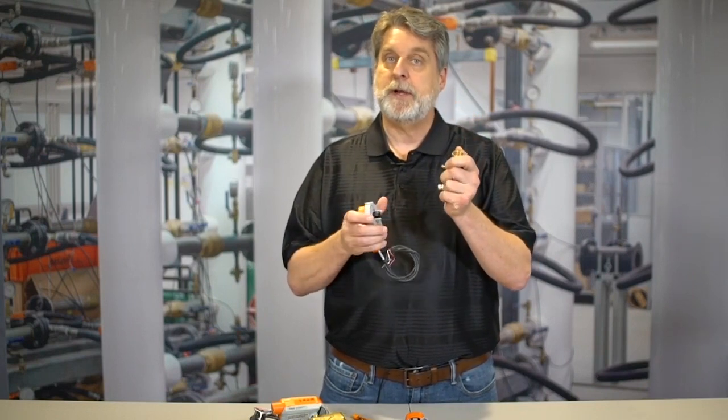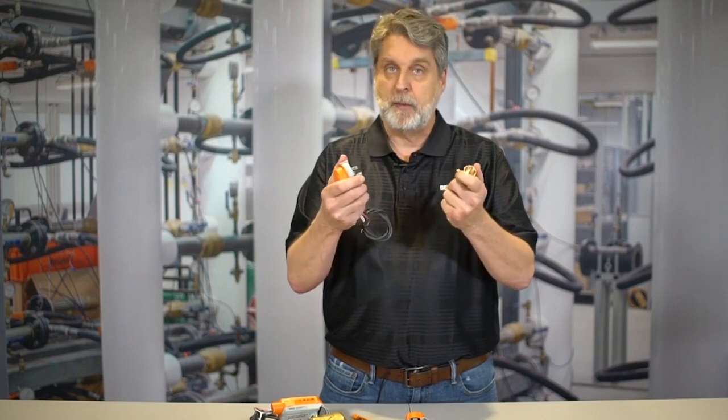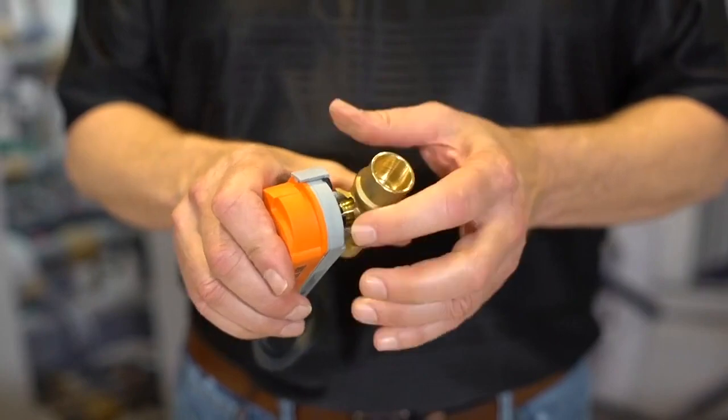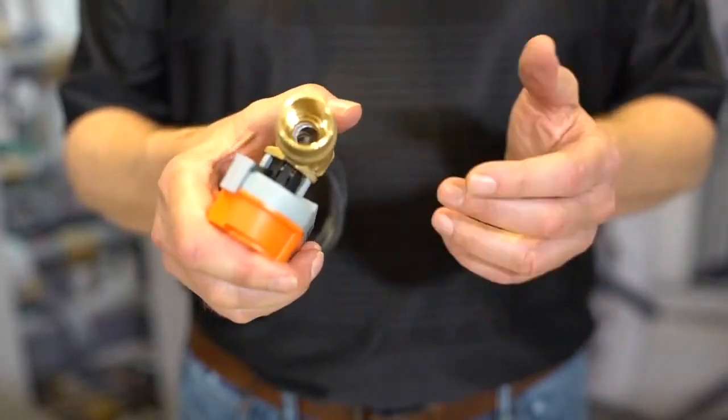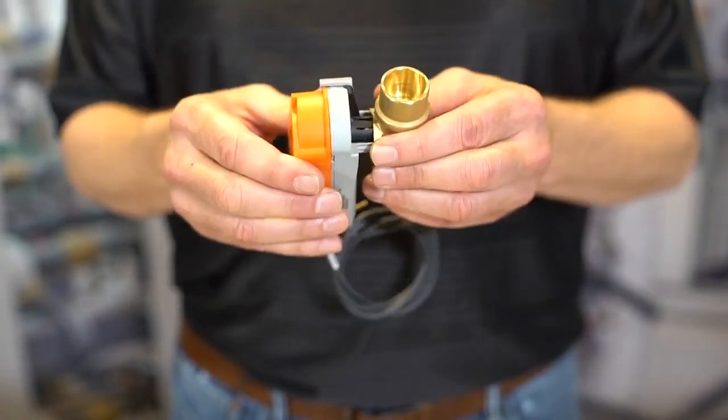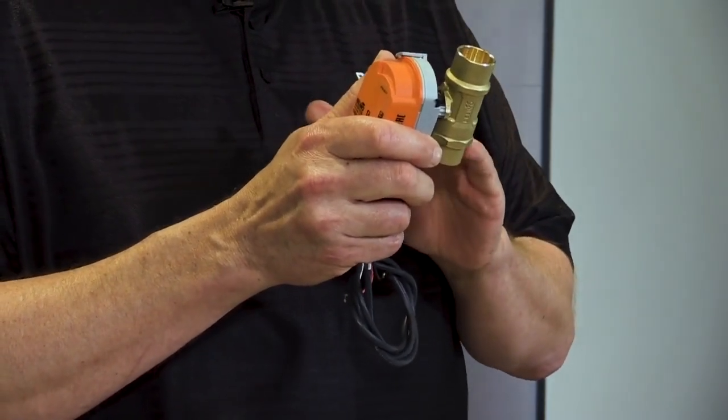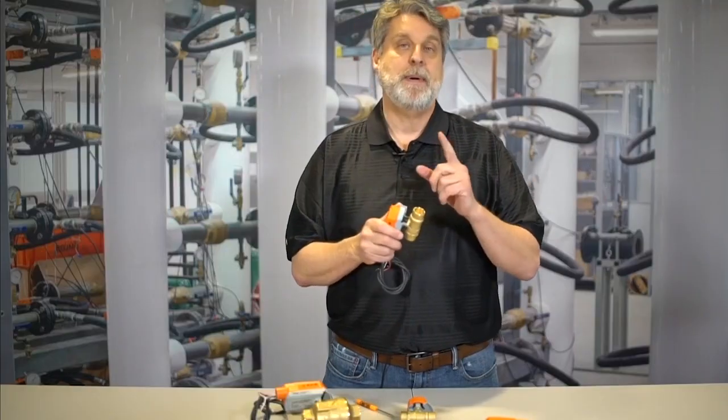If this is already installed in a piping system, it's much easier. In this example here, I'm just holding it out in the open. I'm going to put it back together and you hear that click. That means it's gone back together correctly. You shouldn't have to force it or do any twisting or turning. It should go right back together.